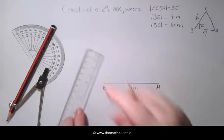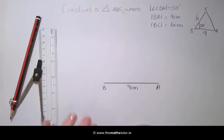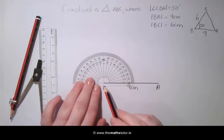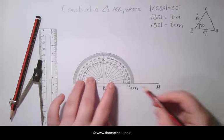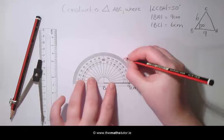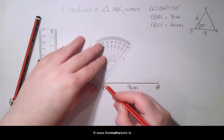We then need to draw an angle of 50 degrees at the point B. So placing our protractor at the start of our line in the centre we draw an angle of 50 degrees and we draw a line through this point.